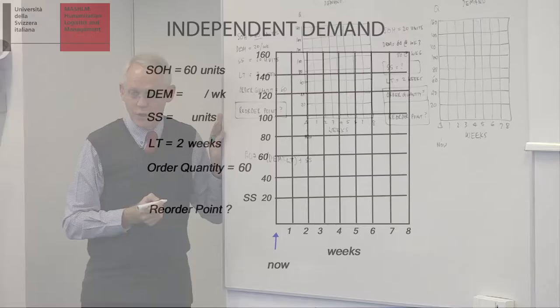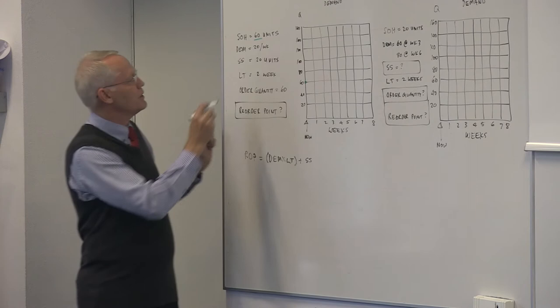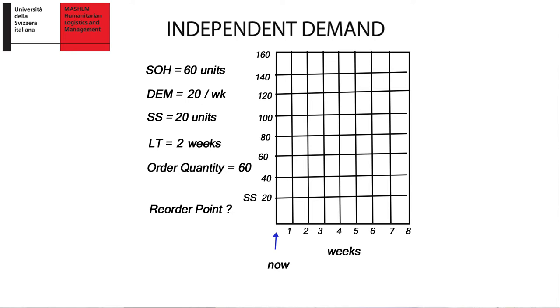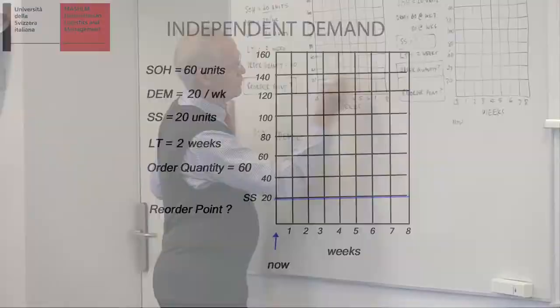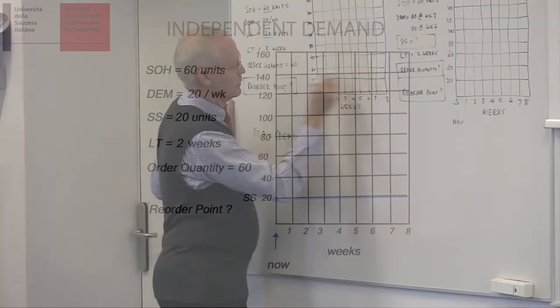I know also I need safety stock of 20 units. So, if my safety stock is 20, I don't want to eat into safety stock, so that's for me a limit, safety stock. I may not eat into safety stock if I can prevent it. So, let's go back to my demand, 20 per week.